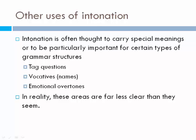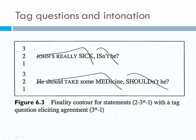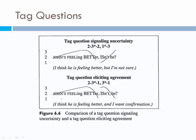Tag questions and intonation. If your voice goes down at the end of a tag question, it means you want the person to agree with you. For example: 'John's really sick, isn't he?' 'He should take some medicine, shouldn't he?' — falling intonation signals you hope the listener agrees. If you have rising intonation in a tag question, you are uncertain and want someone to clarify: 'John's feeling better, isn't he?' — rising means 'Is he? I'm not sure. Please tell me.' Versus falling: 'I think he's feeling better and I want you to agree with me.'